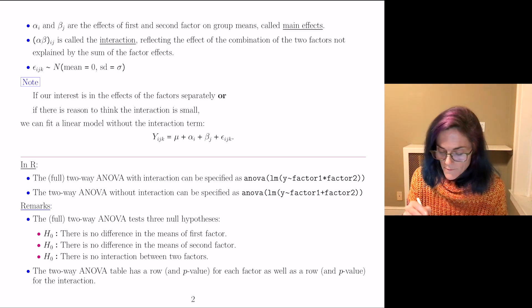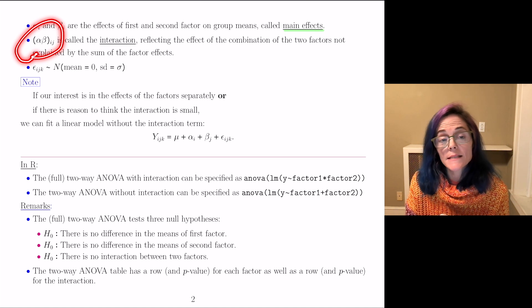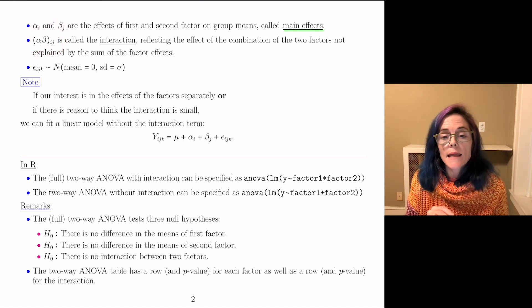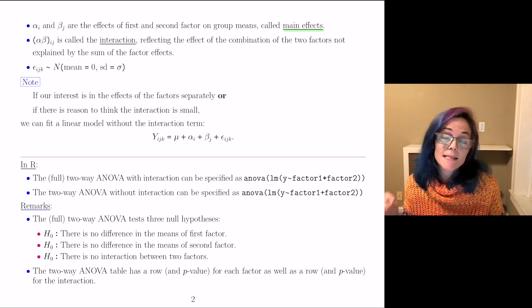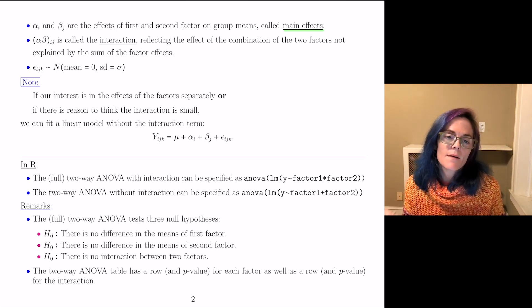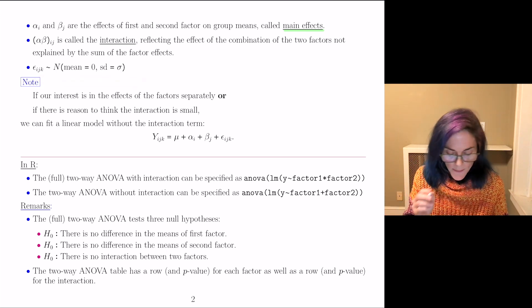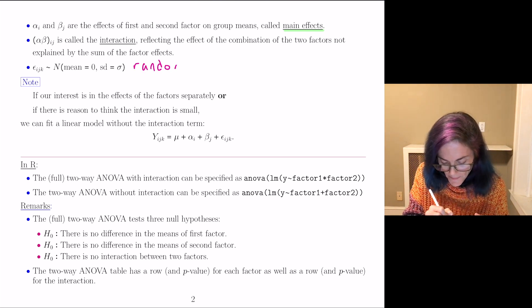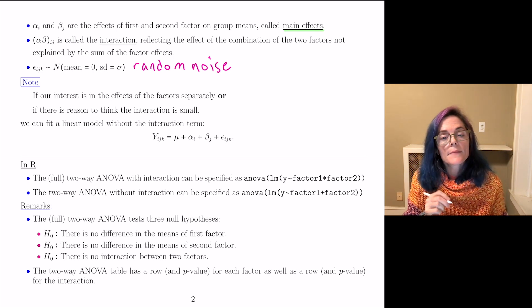So α_i and β_j are the effects of the first and second factor on the group means. They are called main effects. And then this term, which is written as (αβ)_ij, is called the interaction. And it reflects the effect of the combination of the first two factors, which is not explained by the sum of the factor effects. Once again, we have this ε_ijk, which is our random noise.